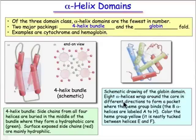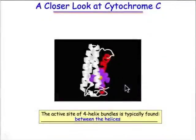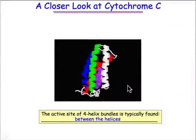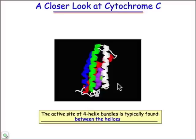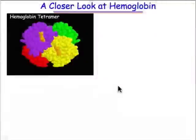Let's take a look at the three-dimensional structure, starting with cytochrome C. The four different helices are colored there. Cytochrome C also has an iron porphyrin and you can see the iron atom right there. The imidazole side chains are there binding that iron as well.